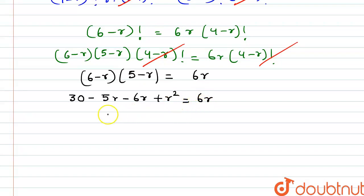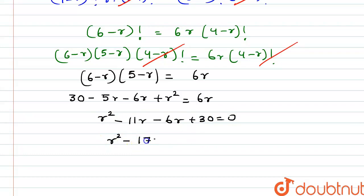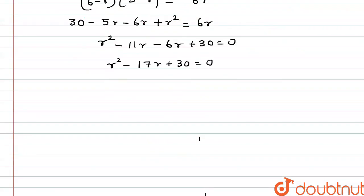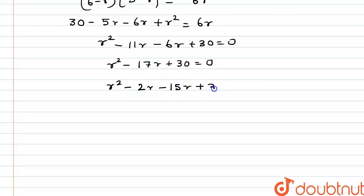Taking 6r to the other side, we get r squared minus 11r minus 6r plus 30 equal to 0, or r squared minus 17r plus 30 equal to 0. Now here we get a quadratic equation. We can write 17r as 2r plus 15r, so we write this as r squared minus 2r minus 15r plus 30 equal to 0.